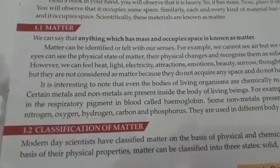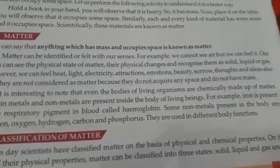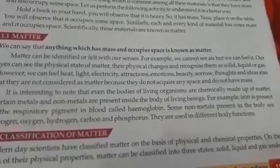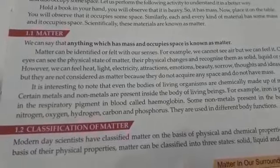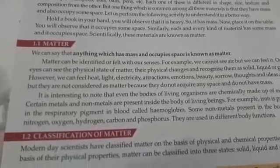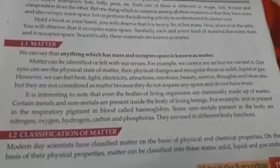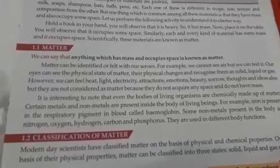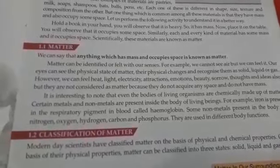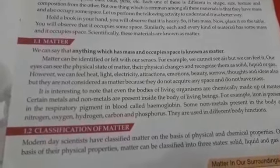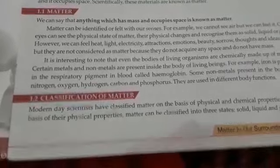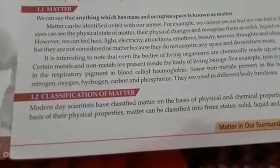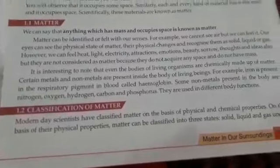It is interesting to note that even the bodies of living organisms are chemically made up of matter. Certain metals and non-metals are present inside the bodies of living beings. For example, iron is present in the respiratory pigment hemoglobin. Some non-metals present in the body include nitrogen, oxygen, carbon, and phosphorus, which are used in different body functions.